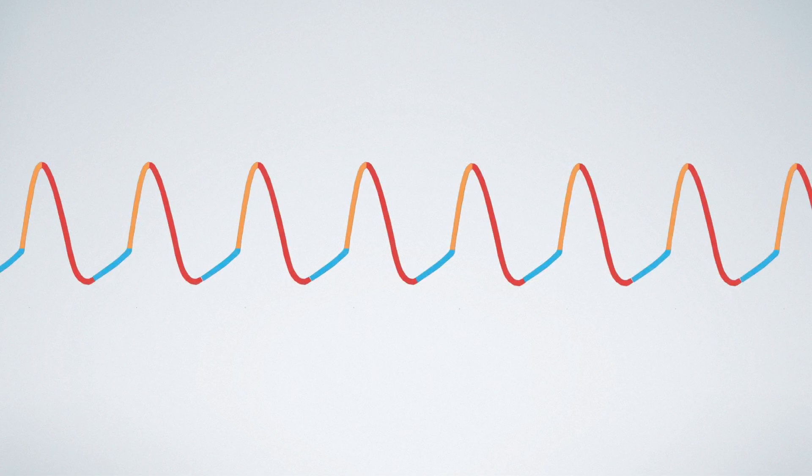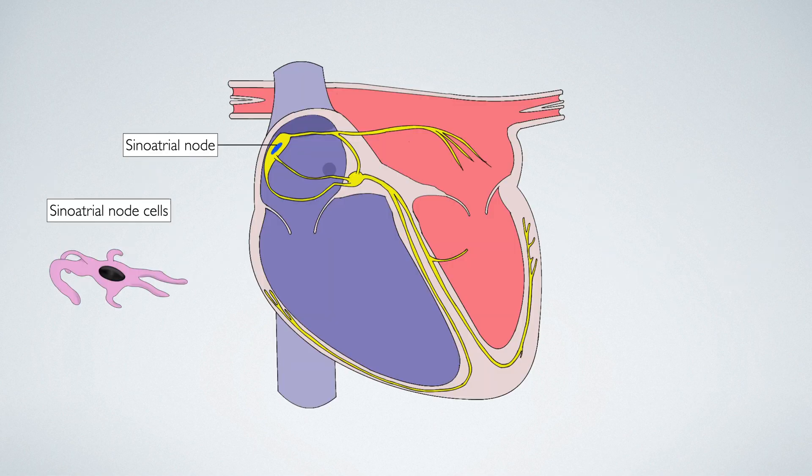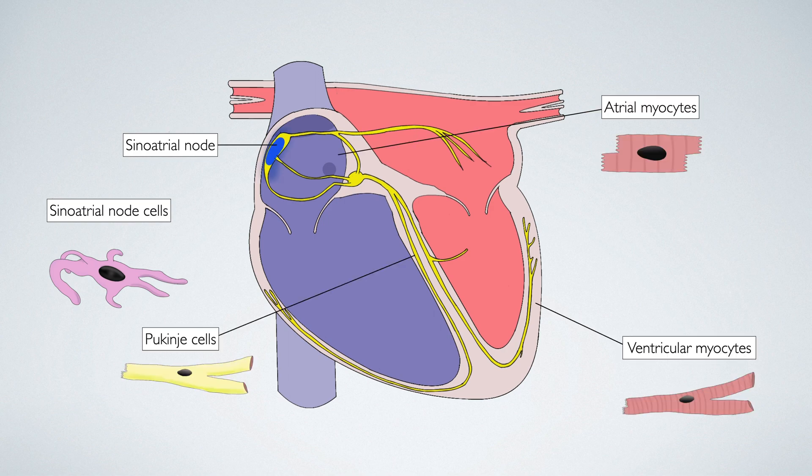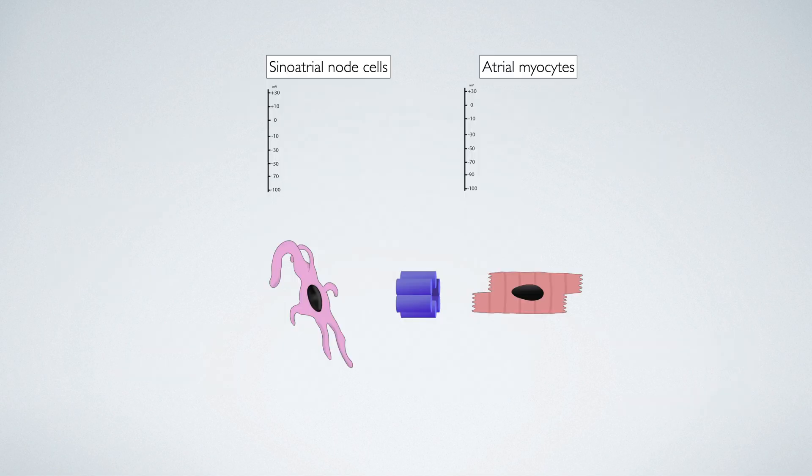So we have learned about how the pacemaker action potential is generated. The next challenge faced by the conduction system is how to propagate this action potential to the other cardiac cells, such as the atrial myocytes and the 400 million myocardial cells that make up the ventricles. This is achieved through an adaptation known as gap junctions.